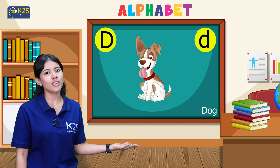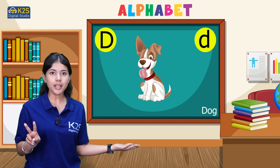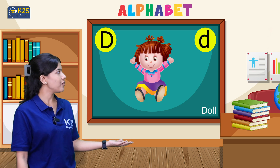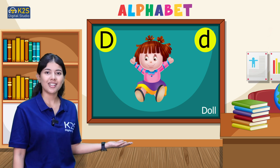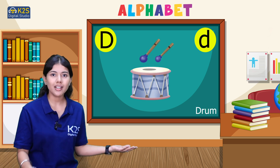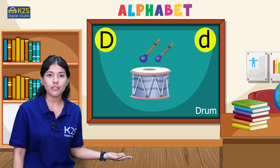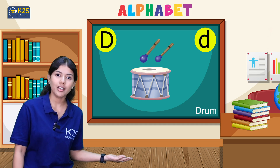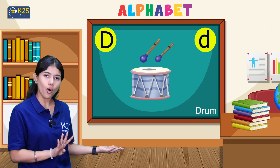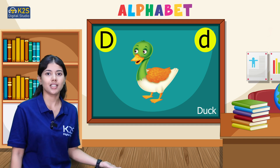Here are the four words from letter D. Let's revise them: first, D for dog; second, D for doll; third, D for drum; and the fourth, D for duck.